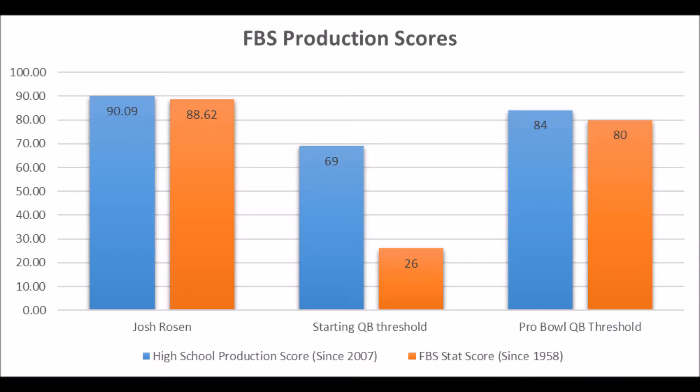When you look at Josh Rosen's data, this is essentially a quick synopsis of his top performances at the high school level and at the college level. He's performed pretty well — had a 90.09 out of 100 high school production score based on my data since the 2007 NFL draft class. Josh Rosen pretty much hits every single threshold you're looking for when it comes to a long-term starting quarterback and a Pro Bowl quarterback based on the data and that time span.